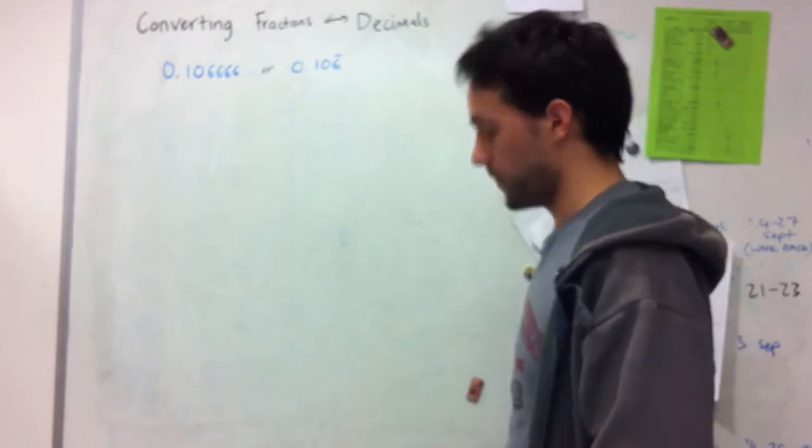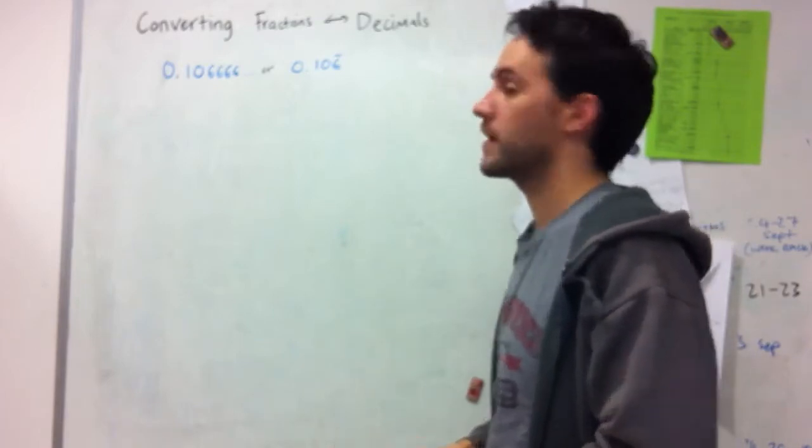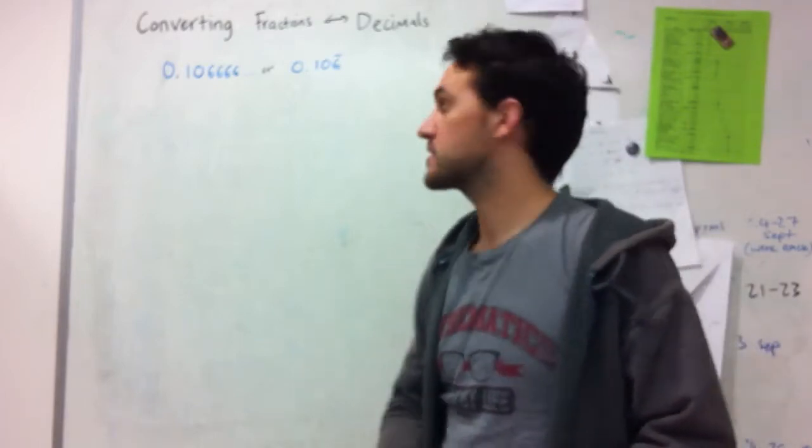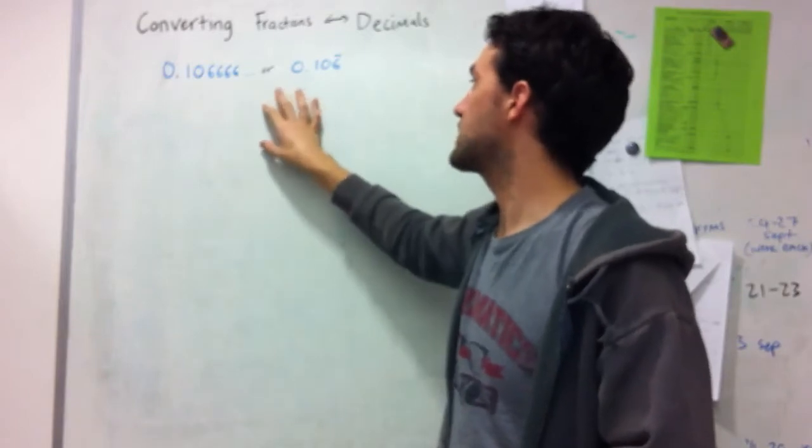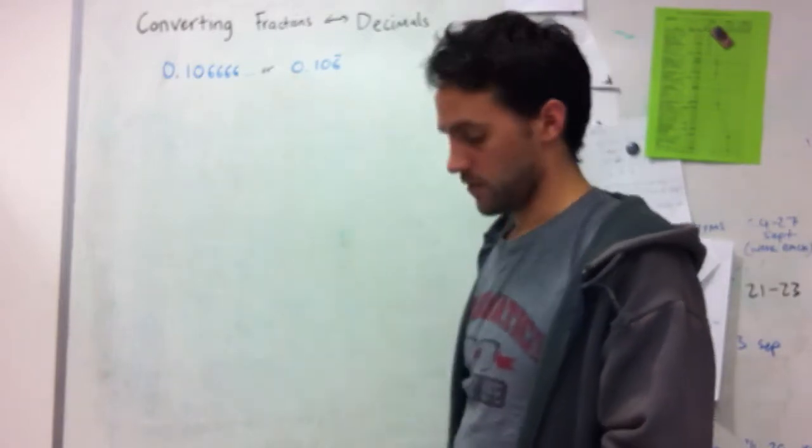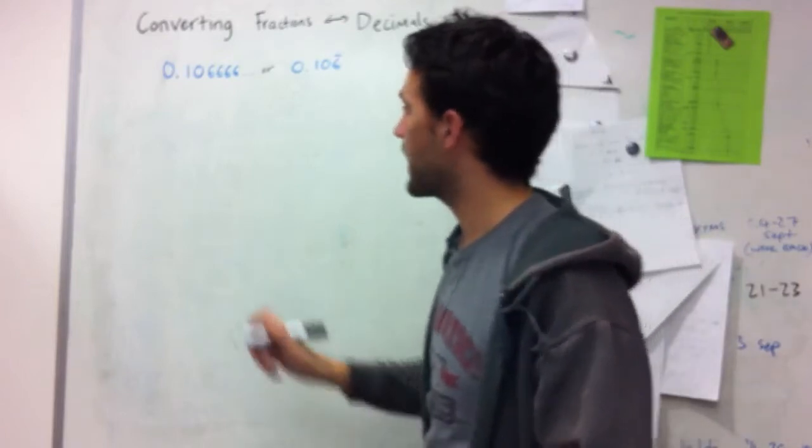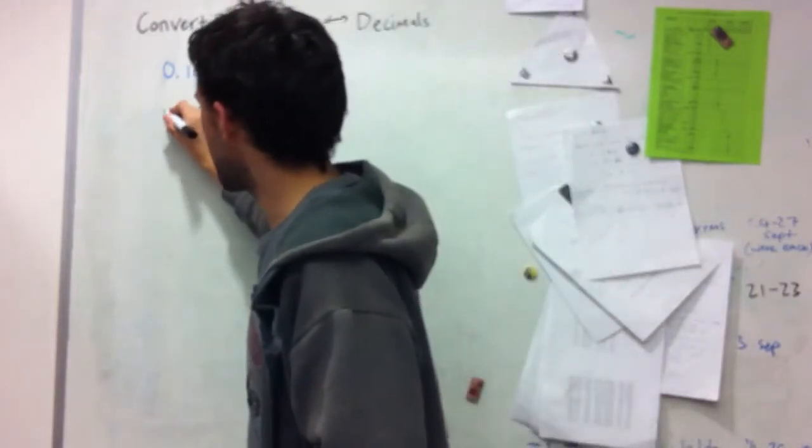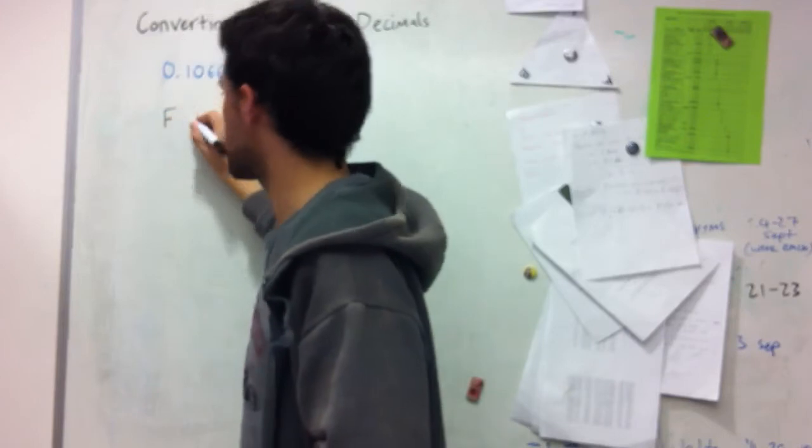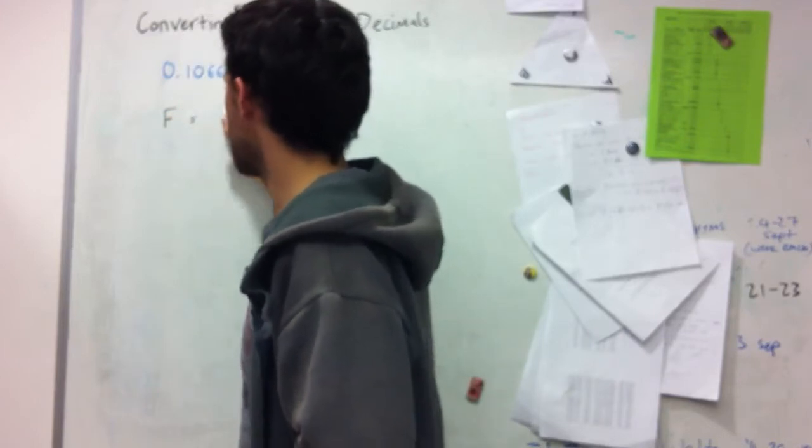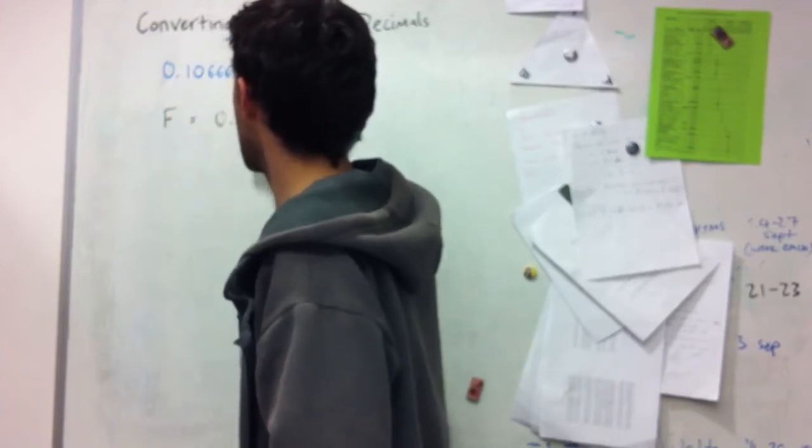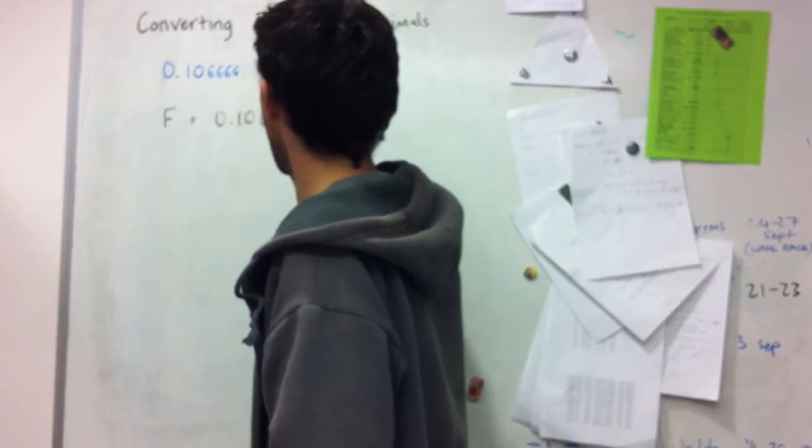So our first step is I assume that there's some fractional representation for this number. It's 0.106 recurring, just the 6 recurs. What I do is I say I'm going to say that f, which represents my fraction, is equal to 0.106 recurring, like this.